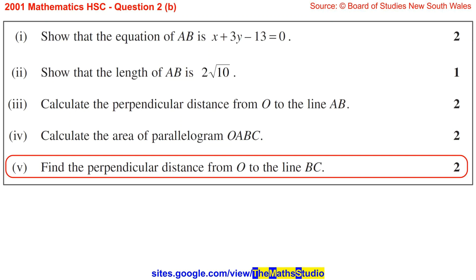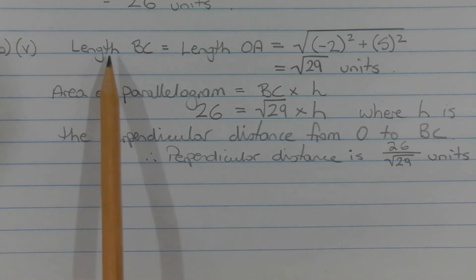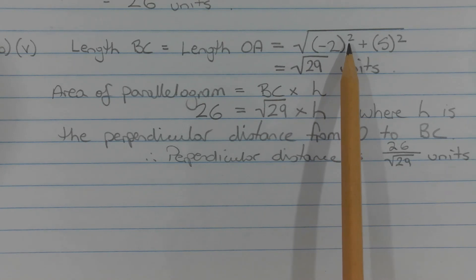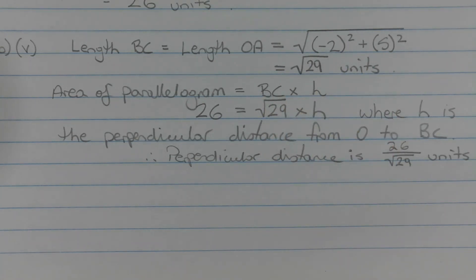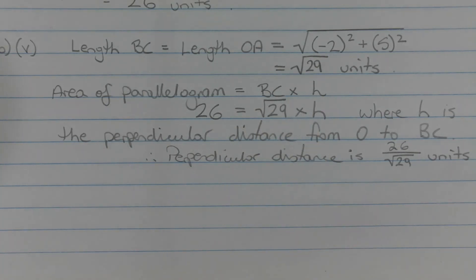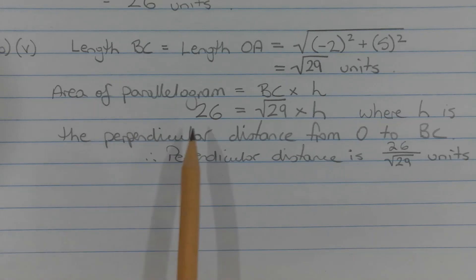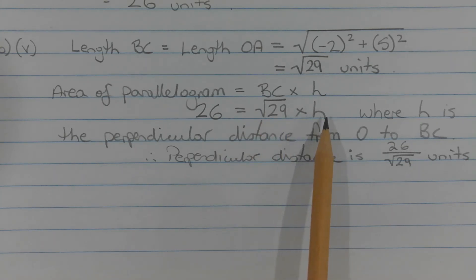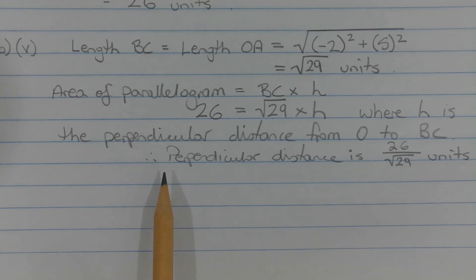Part 5: Find the perpendicular distance from O to the line BC. The length of interval BC equals the length of interval OA, as they are opposite sides of the parallelogram. That equals the square root of (-2)squared plus 5 squared, which equals the square root of 29 units. Since area equals BC times h, substituting 26 for the area and root 29 for BC and solving for h, we get the perpendicular distance equals 26 over the square root of 29 units.